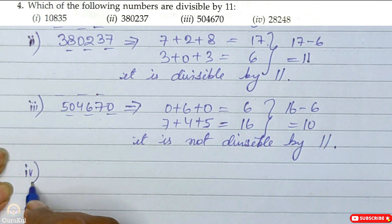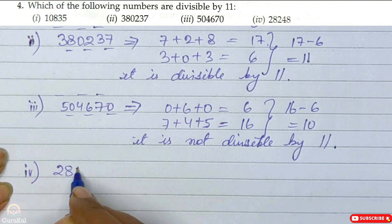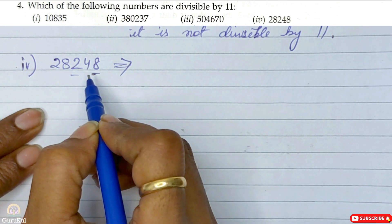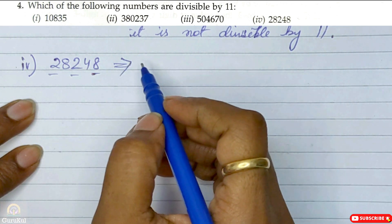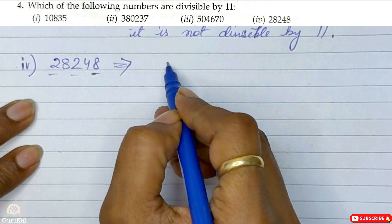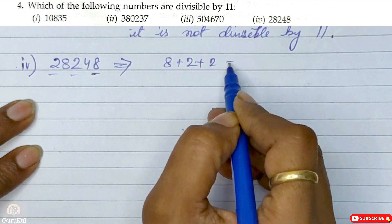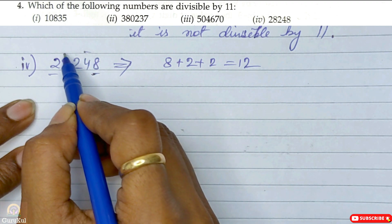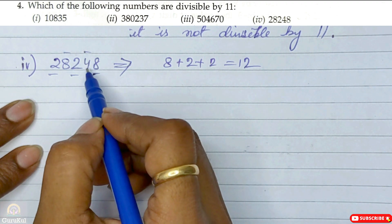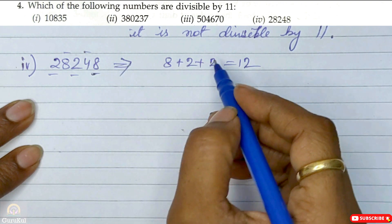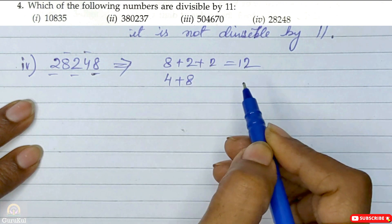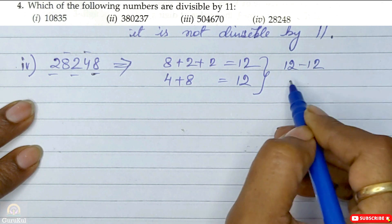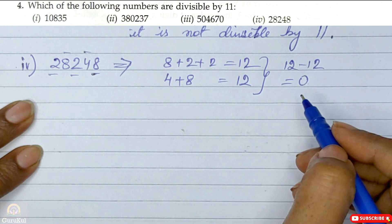Now the fourth one: the number is 2, 8, 2, 4, 8 — that is 28248. The sum of digits at odd places starting from the unit place is 8 plus 2 plus 2, which gives us 12. Then the sum of digits starting from the even place — the difference works out such that this number is also divisible by 11.